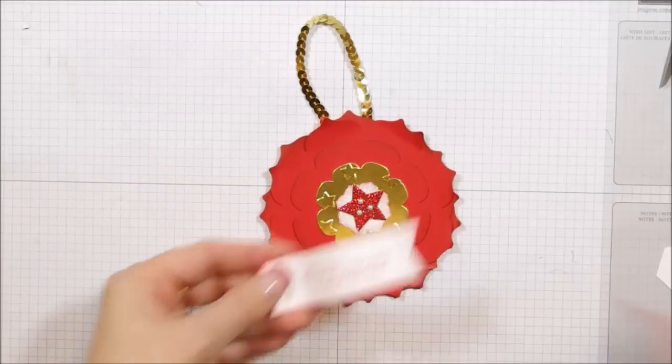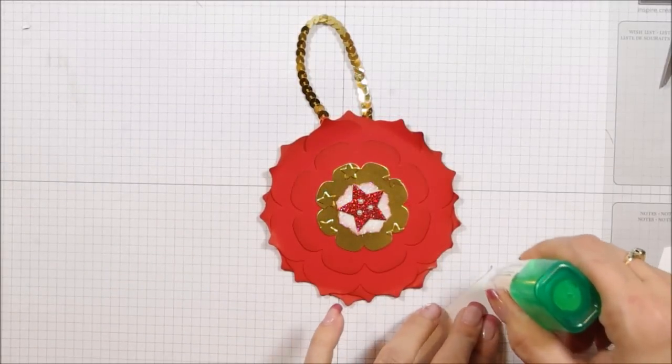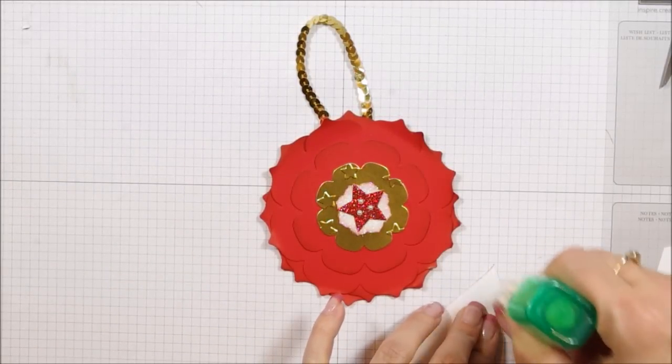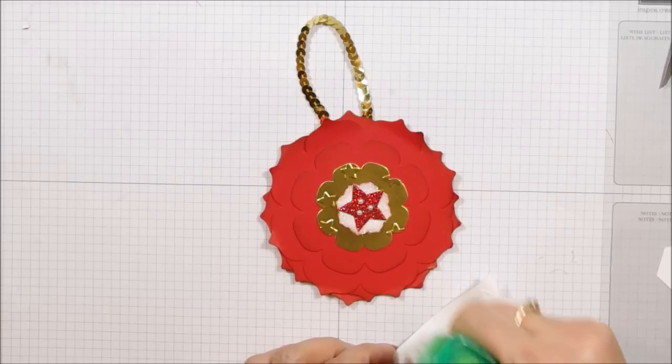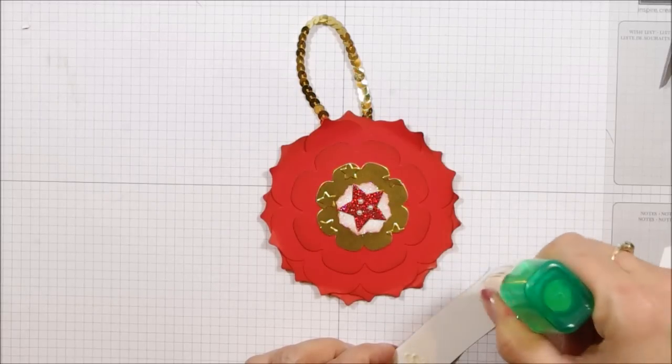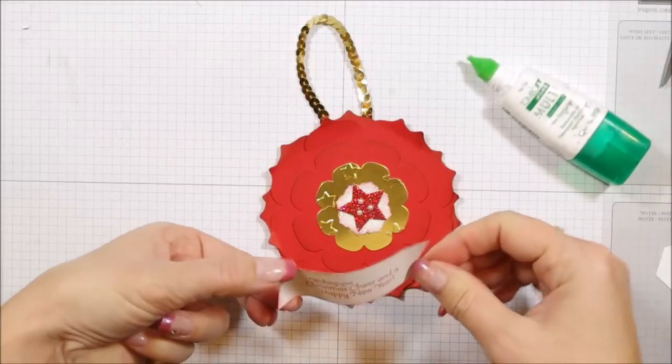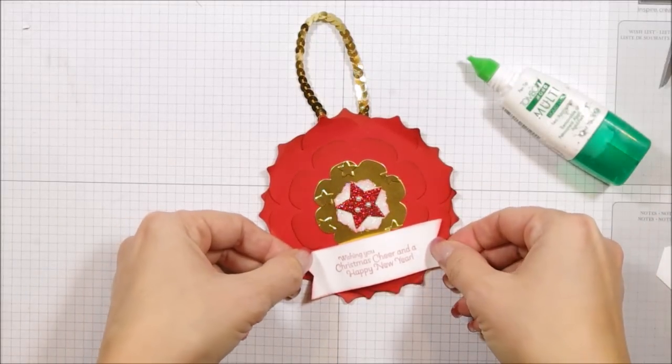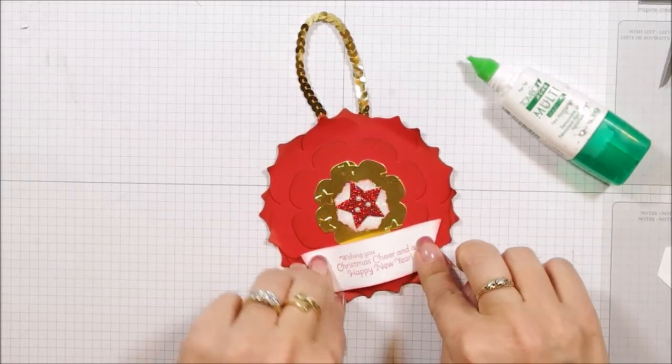And then the last step is to take back our banner, and we're just going to put some Tombow at the corners of our banner like this. And again, it's going to take some time for that to dry, so just be patient. And we're going to put that right on top of our cute little tag.